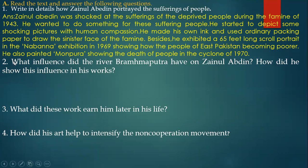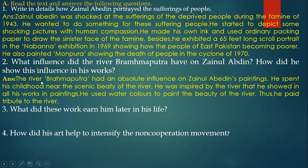He exhibited a 65-feet-long scroll portrait in the Nabanno exhibition in 1969, showing how the people of East Pakistan were becoming poorer. He also painted Monpura, showing the devastation of the cyclone of 1970. Answer to question two: the river Brahmaputra had an absolute influence on Zainul Abidin's painting. He spent his childhood near the scenic beauty of the river. Inspired by it, he showed the river in all his works, using watercolors to paint its beauty and paying tribute to the river.